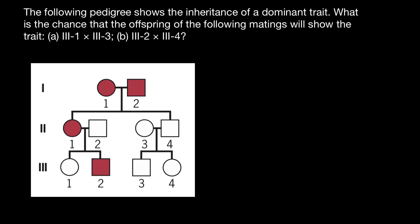So the first couple we are interested in is going to be three-one and three-three. What is the probability that if this couple would marry, their child would also show this trait?